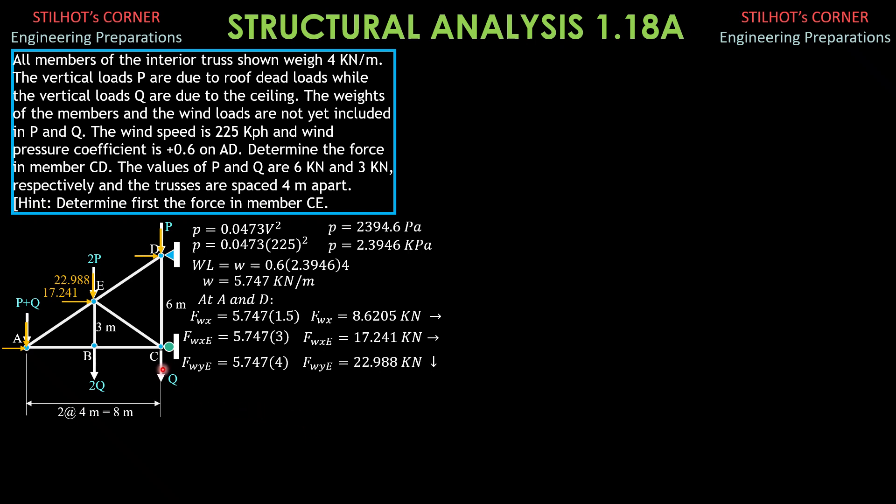So for the weight of members, gravity loads, take note that this is 3 meters, half of 6. And therefore, this is square root of 4 meters squared plus 3 meters squared, so 5 meters, 5 meters. This is also 5 meters. And these members are each 4 meters long.